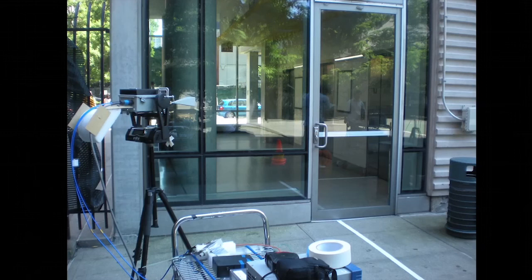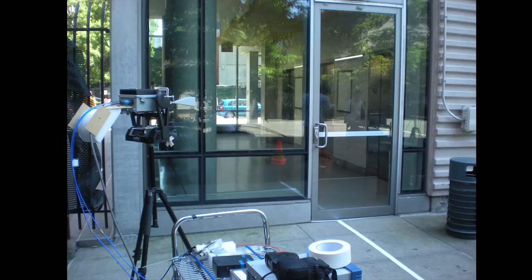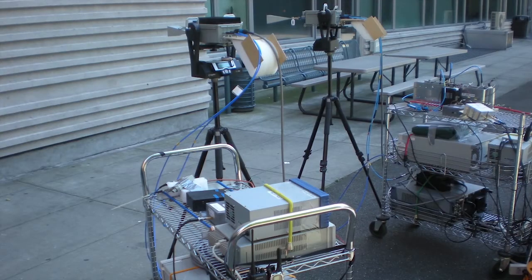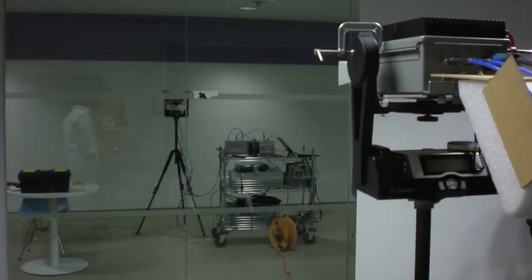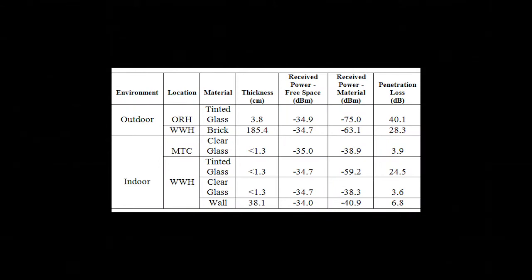Our building penetration tests showed that tinted glass is highly reflective with 80% of power being reflected. Concrete and brick showed similar reflectivity. Drywall and non-tinted glass a few centimeters thick had small penetration losses of 6.8 and 3.6 dB with moderate reflectivity. So indoor access points may be needed when users enter a building.